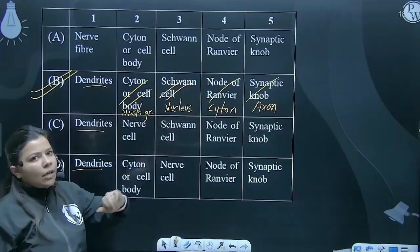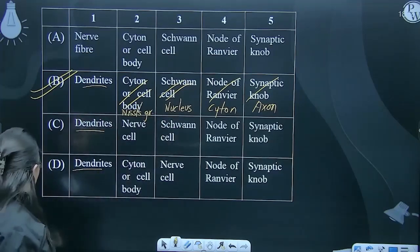To Nissl granules, nucleus, cyton, and axon—this is the labeling. Please change yours. I have just corrected it to Nissl granules. Thank you.